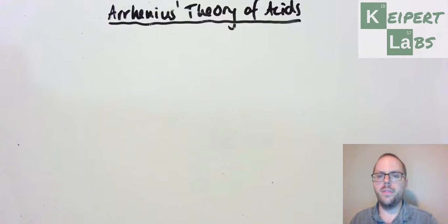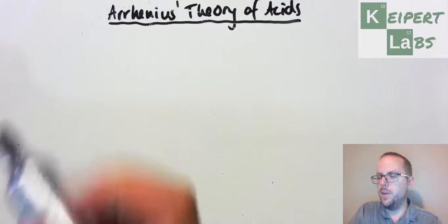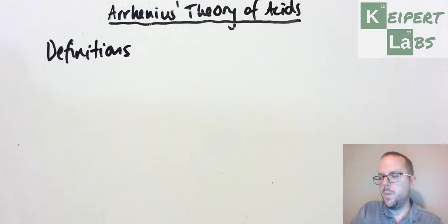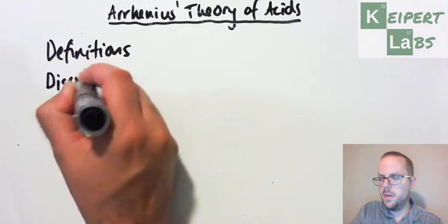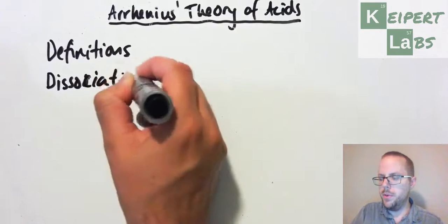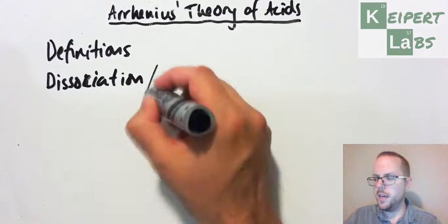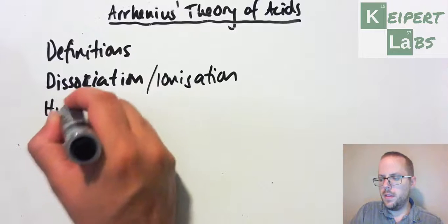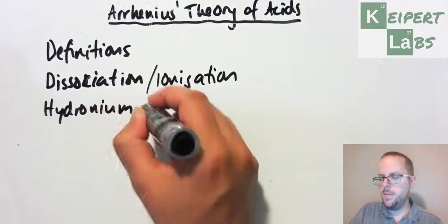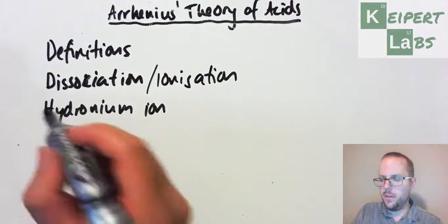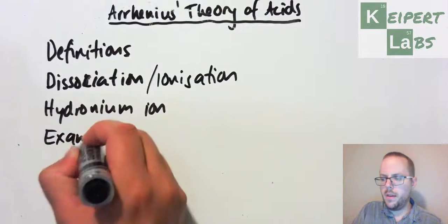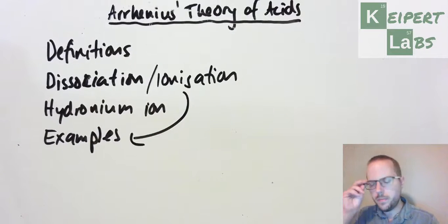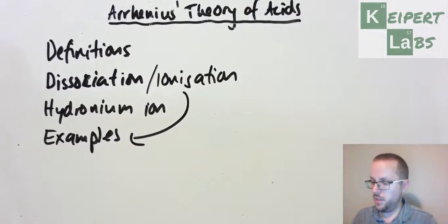Focusing on this particular theory, just by way of giving you a quick overview, we're going to talk about some simple definitions, look at the concept of dissociation or ionization, introduce the hydronium ion, and then look at some practice examples. So that's kind of where we're going to begin.